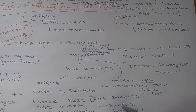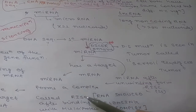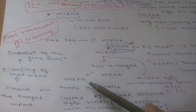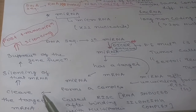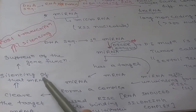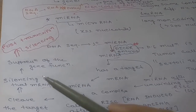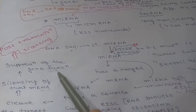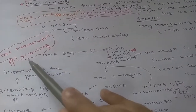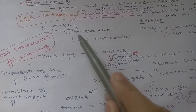The RISC complex binds to the target mRNA and cleaves it, silencing that mRNA so it cannot form protein. This leads to suppression of gene function, a process known as post-transcriptional silencing by miRNA. By using miRNA we can silence any target gene function.